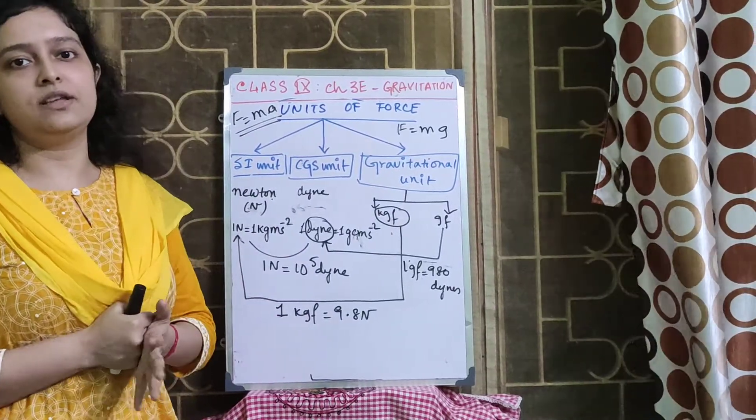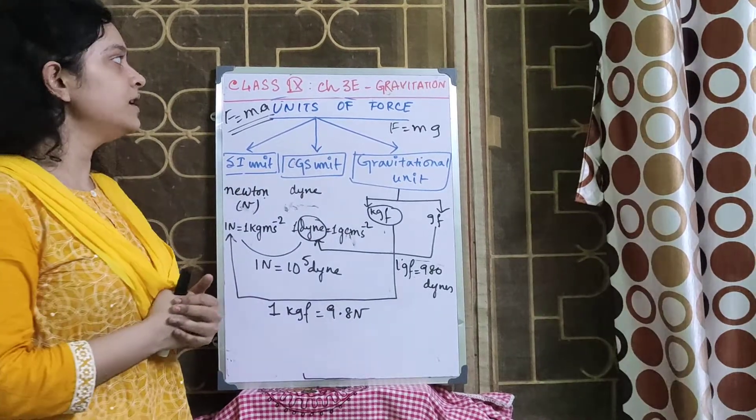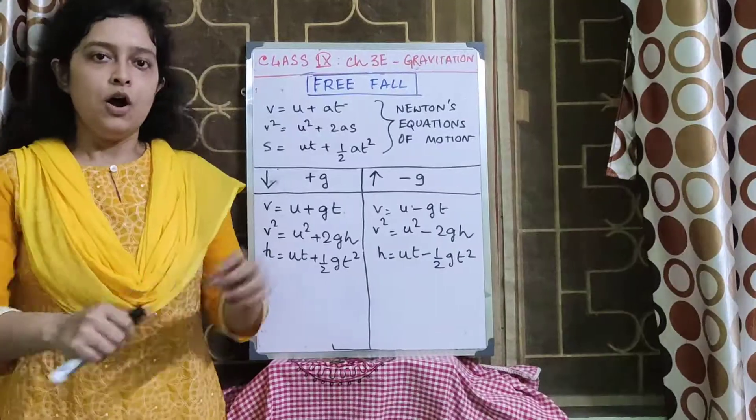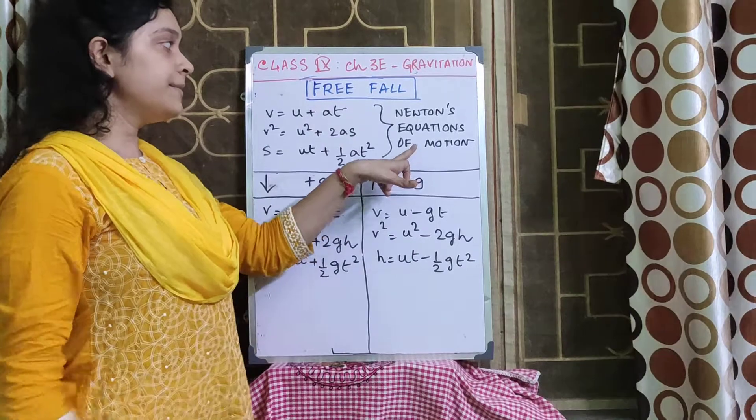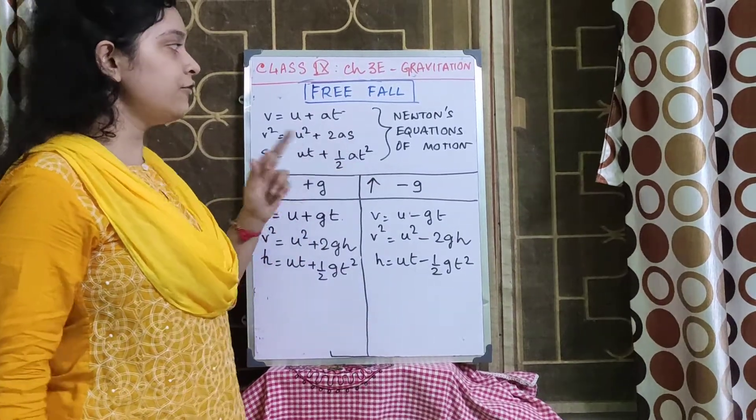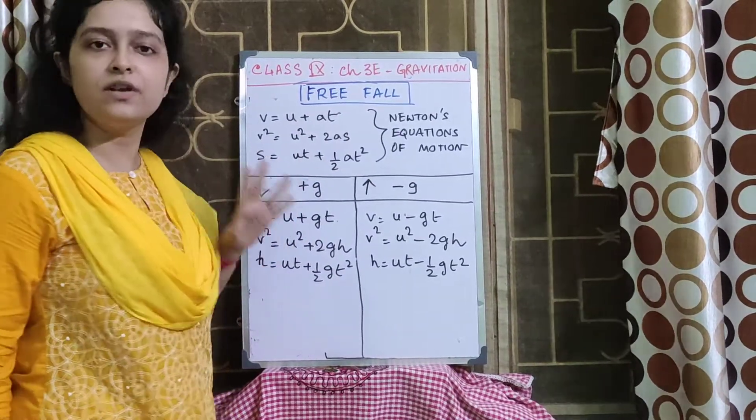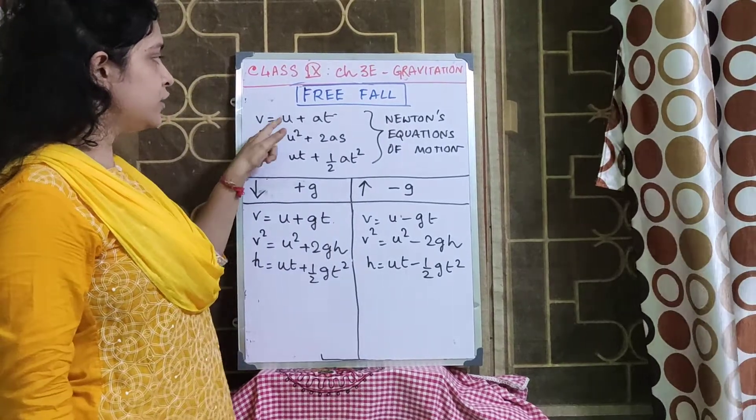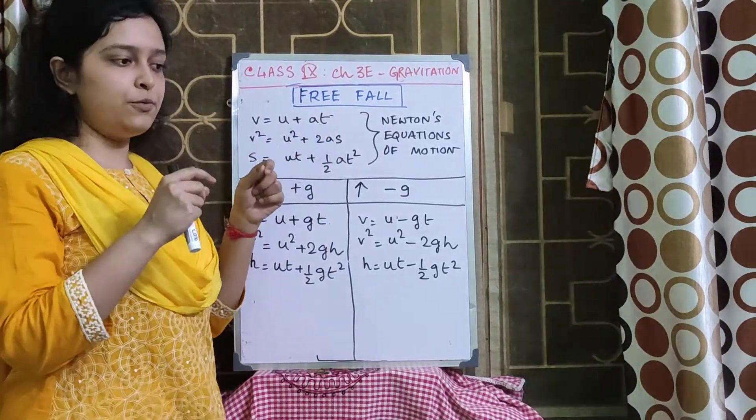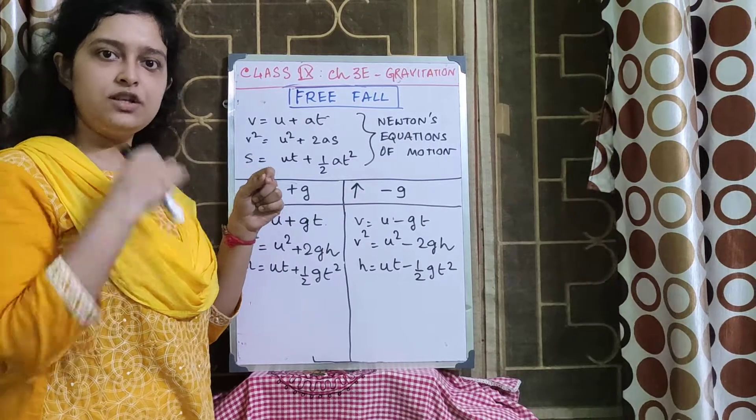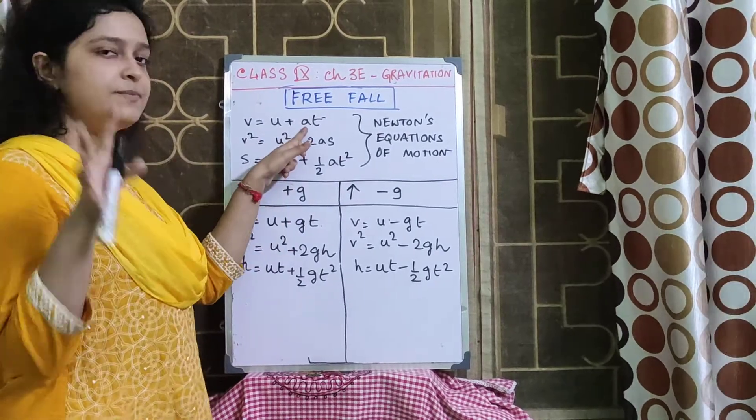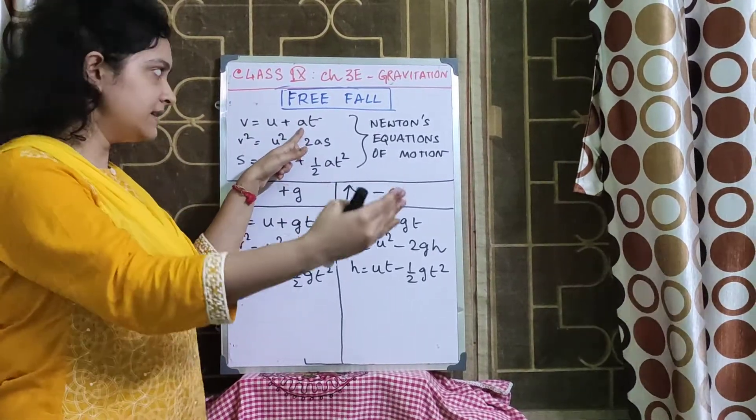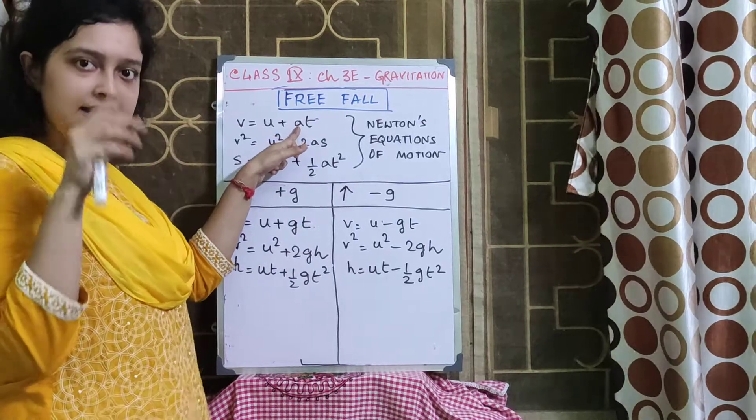Next, we will start with the free fall, the last topic from 3E. Remember the 3 equations of motion, Newton's equations of motion which we have learned. V is equal to U plus AT where suppose a body is moving with initial velocity U.